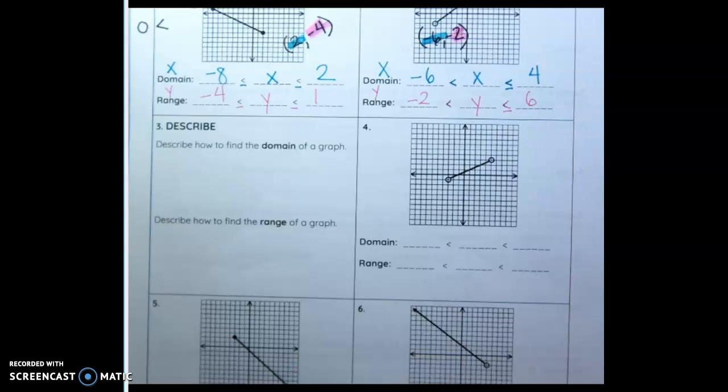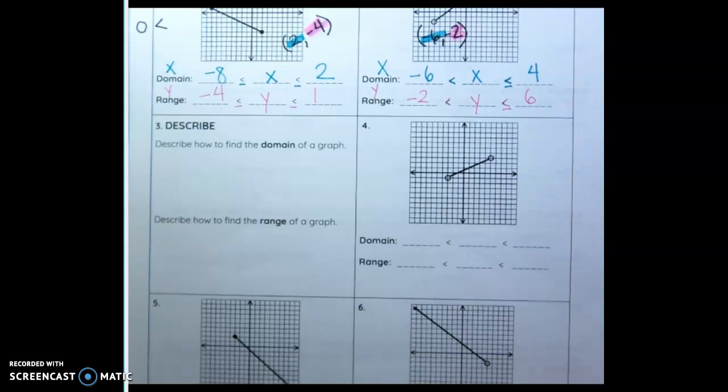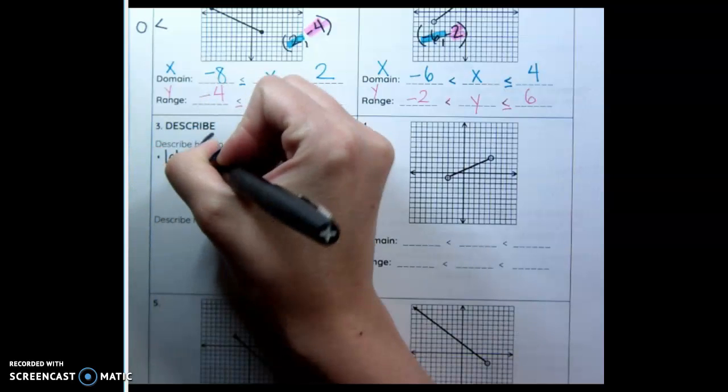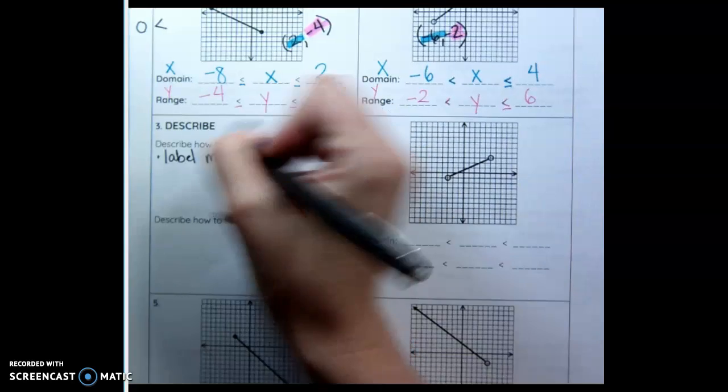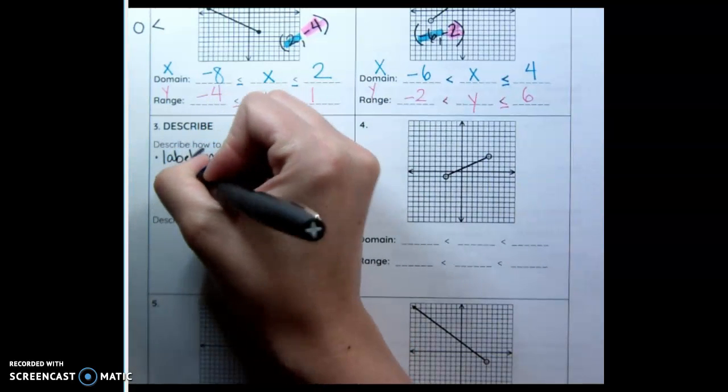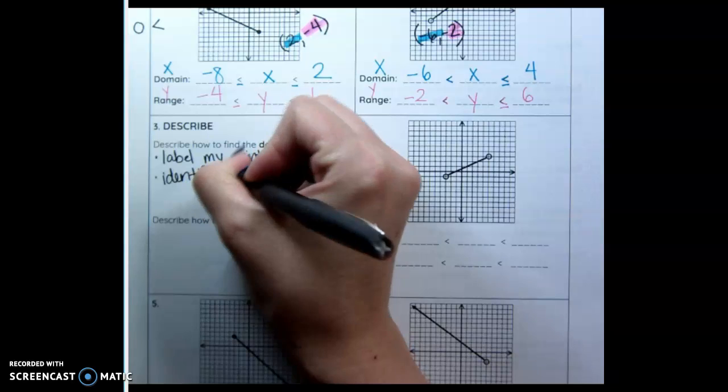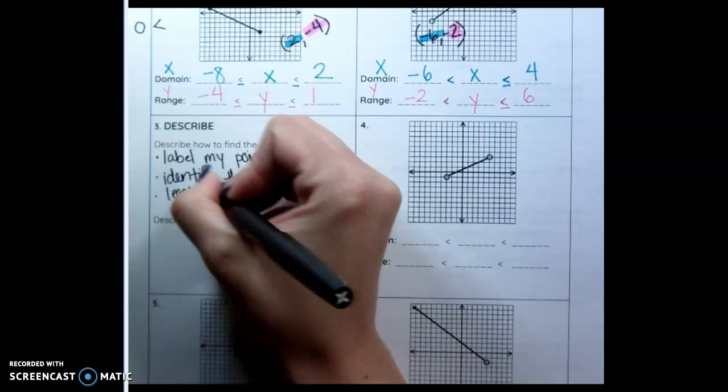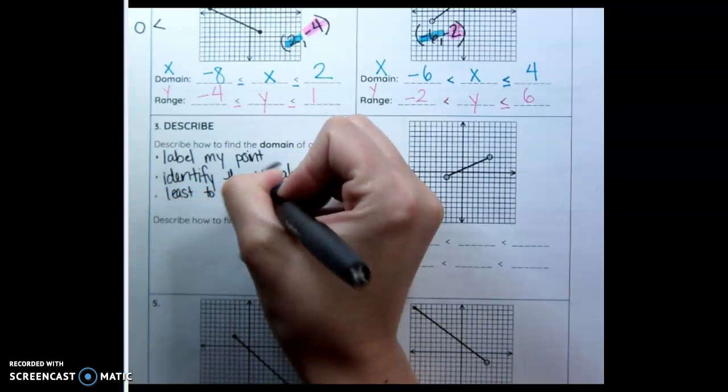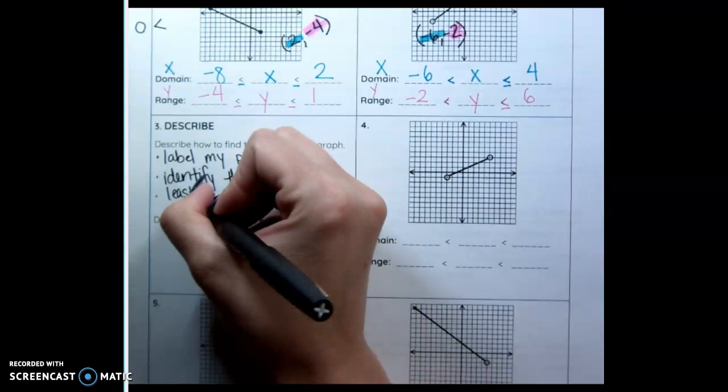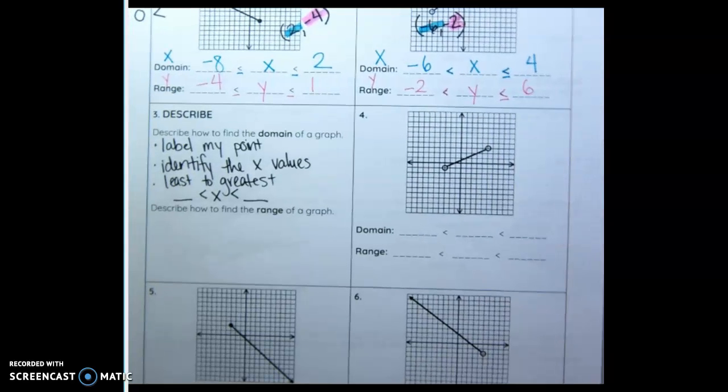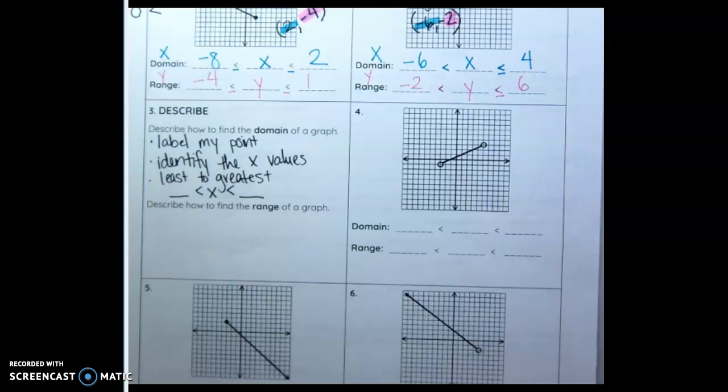I'm going to let you guys do the describe. Describe how to find the domain of a graph. I'll do the domain. It's your job to do the range. First I label my point. I'm going to let you do the range. It should look the same except with the y values.